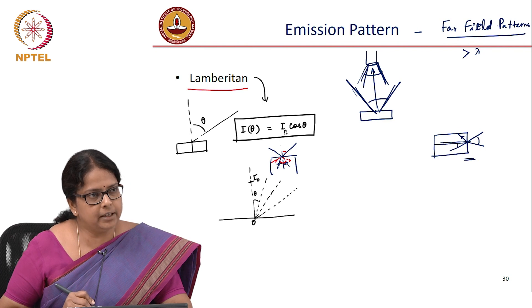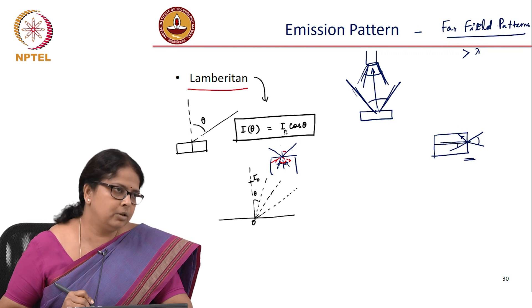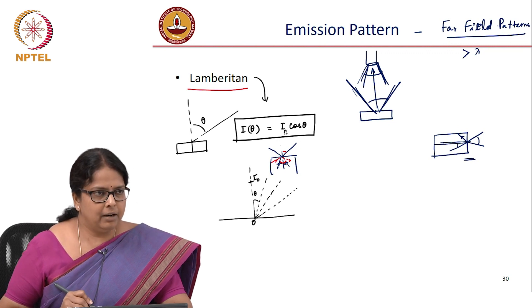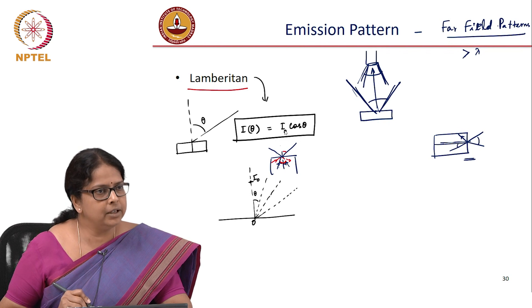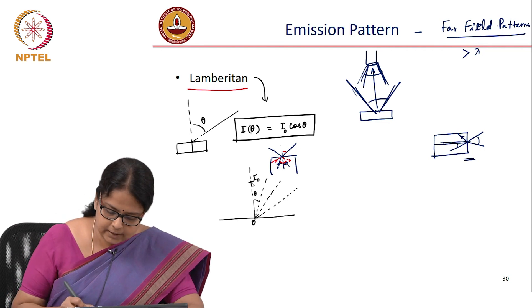Which means at theta equal to 0, it is maximum. Theta equal to 90 degree, its minimum which is 0. Theta equal to 45 degree, I naught by root 2. When does it become half of I naught? 60 degree and so on.